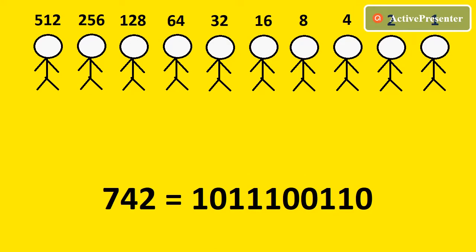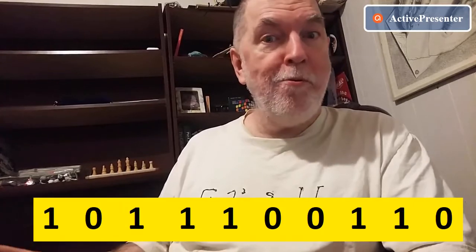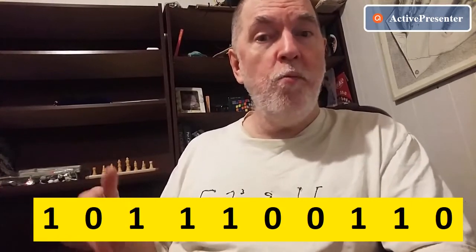Suppose, for example, the poisoned bottle is number 742. Now, the binary code for 742 is 1011100110.